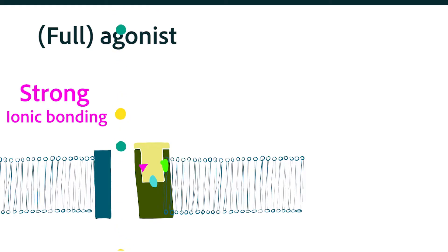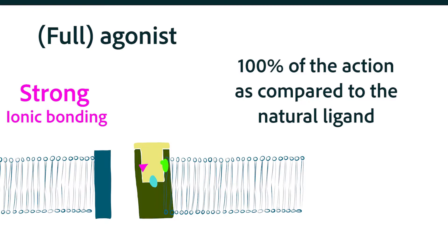A full agonist for that receptor is a substance that does exactly the same as the natural ligand, opening up that gate to 100% of its capability.